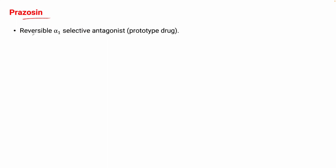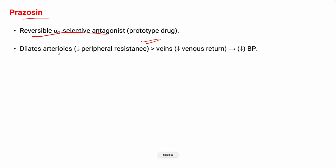Prazosin is a reversible alpha-1 selective antagonist and it is a prototype drug — meaning it has similar actions to all alpha-1 selective antagonists. It dilates arterioles, hence decreases the peripheral resistance created by blood vessels. It dilates arterioles more than veins and hence decreases venous return to the heart, and the overall result is a decrease in blood pressure.